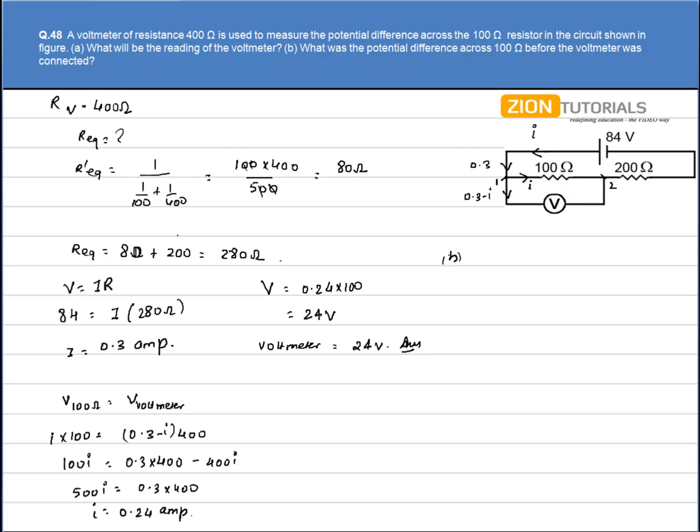In the second part, we have to calculate the potential difference across 100 ohm before the voltmeter was connected. Since voltmeter was not connected earlier, our R equivalent will be simply 100 plus 200, because these two resistors are in series. So I have net resistance as 300 ohm. Net current flowing will be V by R, that is 84 volts divided by 300, which comes out to be 0.28 ampere. The potential drop across 100 ohm resistor can be calculated by V equals IR. That is I is 0.28, resistor is 100, which gives me reading 28 volts. That is the answer.